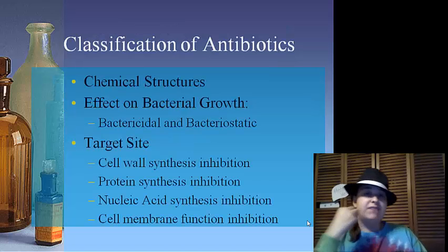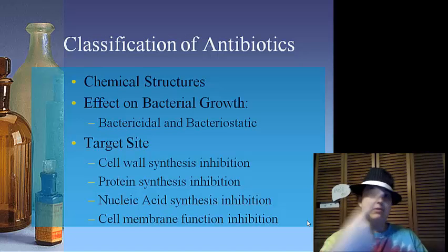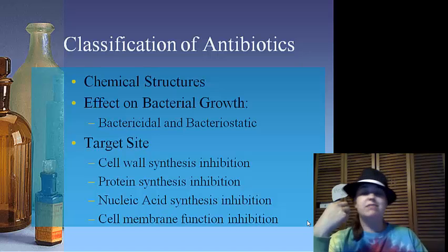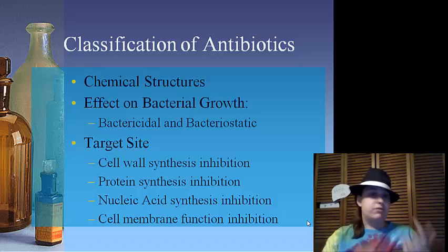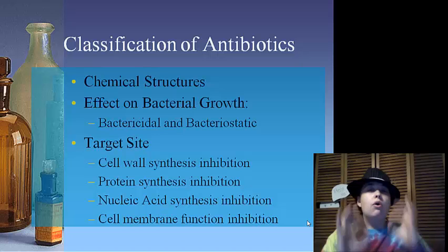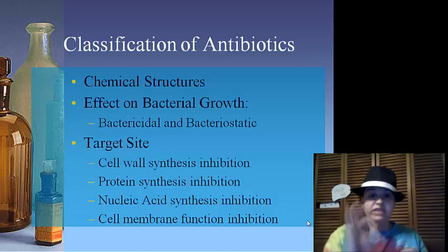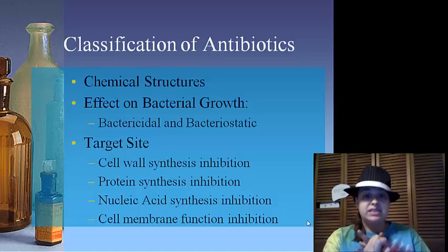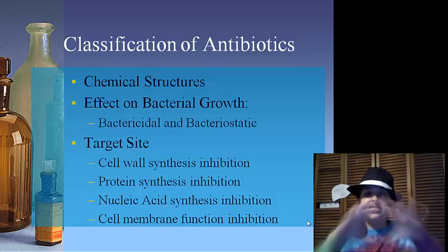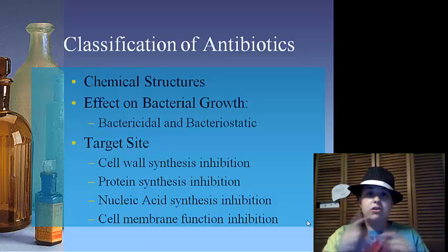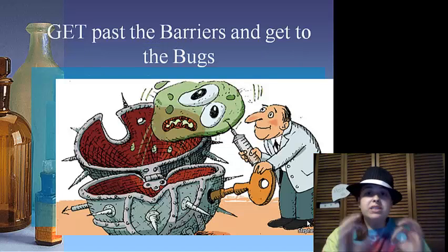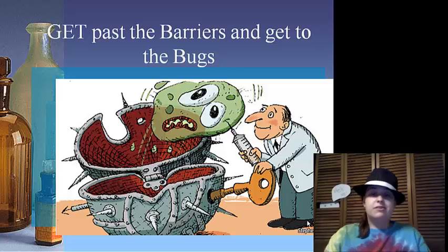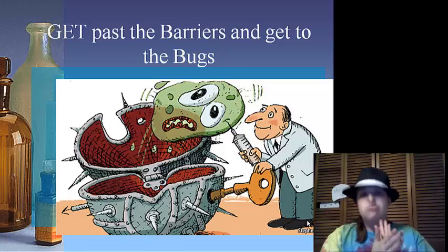Now, classification. We classify antibiotics on three big things: we can classify them on chemical structure — the way they look; we can classify them on effects of bacterial growth, whether they're bactericidal or bacteriostatic; or we can classify them on their target site — what they're trying to hit. Their target may be cell wall synthesis, protein synthesis, nucleic acid synthesis, or inhibition of cell membrane function. Those are the target sites. We must get past the barriers to actually get to the bugs, and if we hit these target sites, we can squash out the bugs.